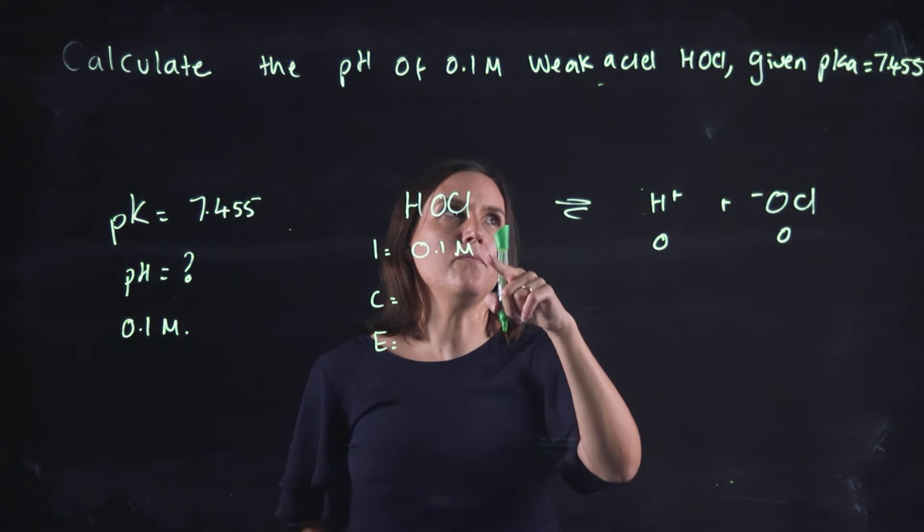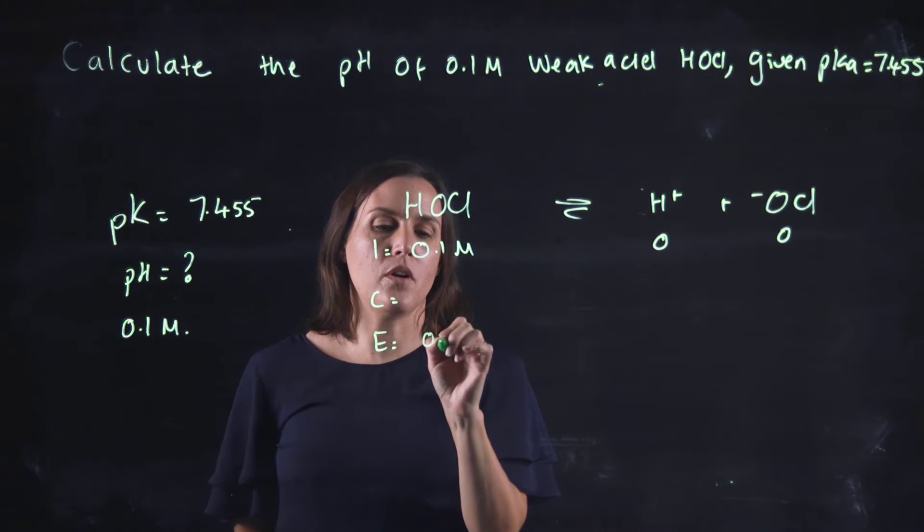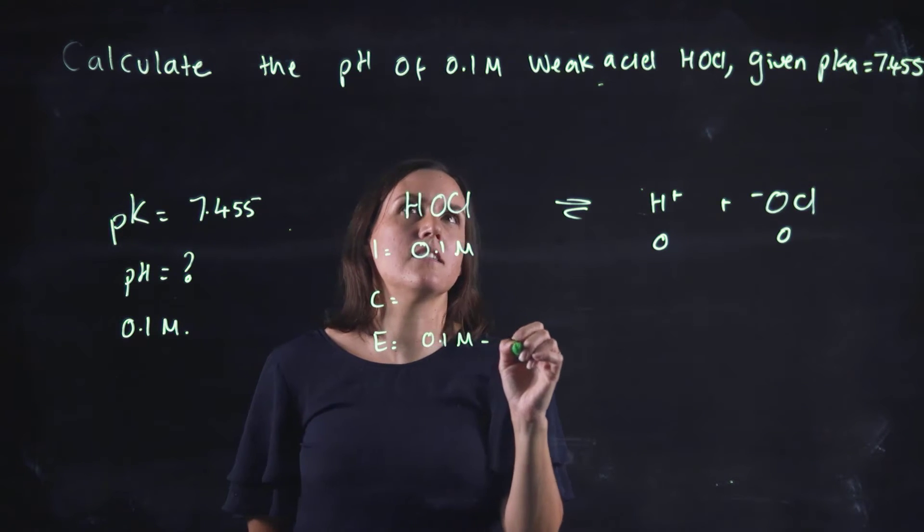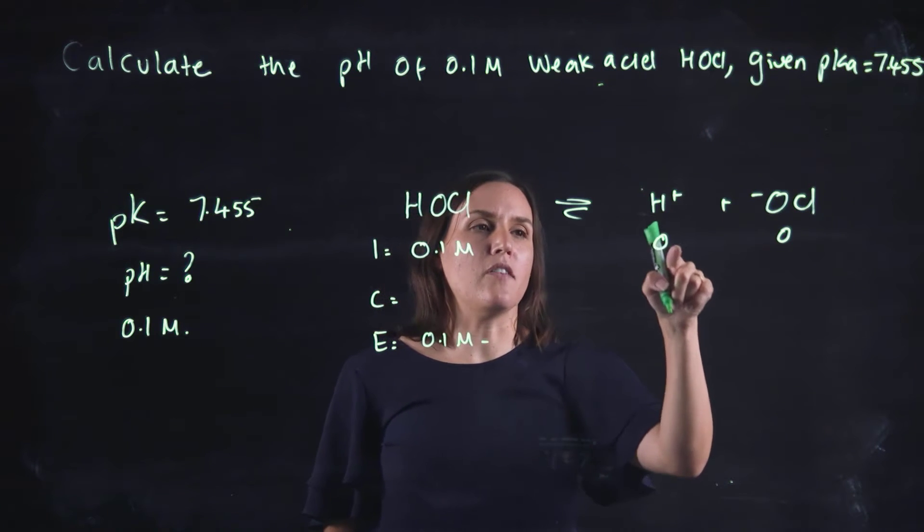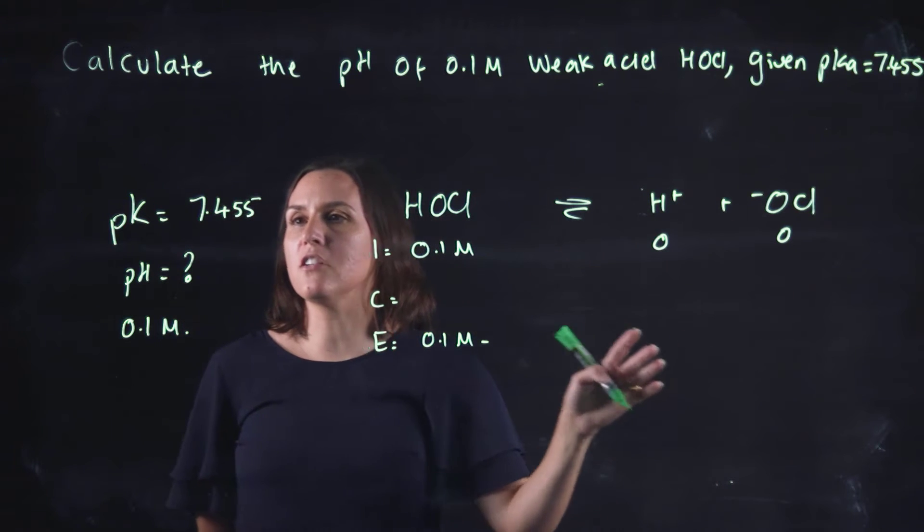So at equilibrium we would have 0.1 molar minus the value that we're going to calculate. So let's do some calculations so we can fill in a little bit more information.